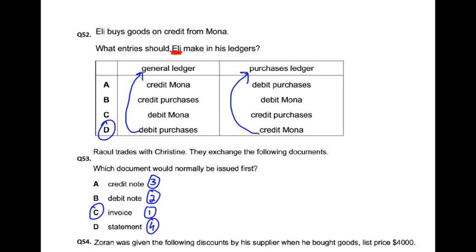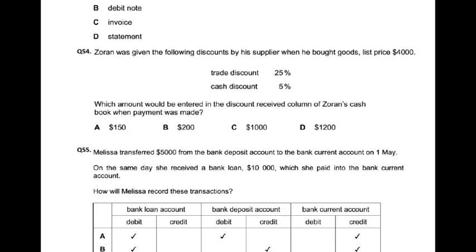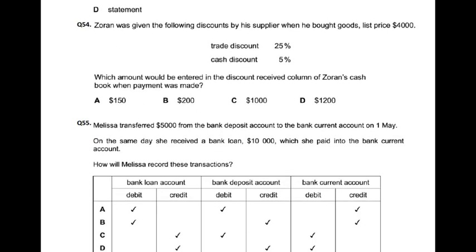And after that, let's talk about 54. In 54, it says, Zoran was given the following discount by his supplier when he bought goods. List price is 4,000. If you look at it, there is a trade discount and a cash discount. Which amount would be entered in the discount received column of Zoran's cash book when payment was made?